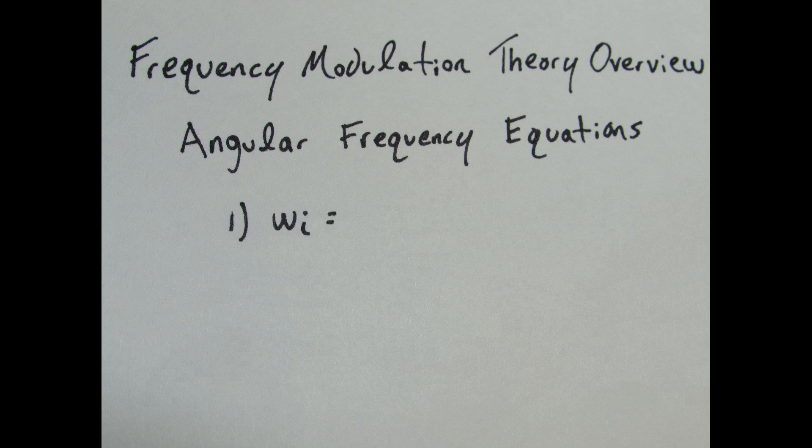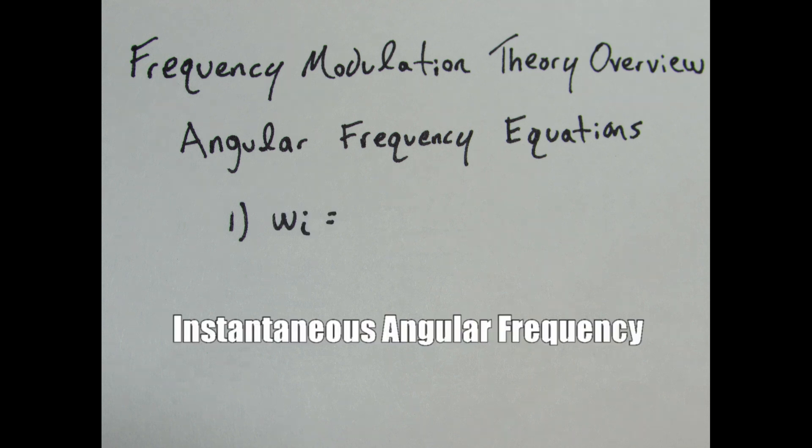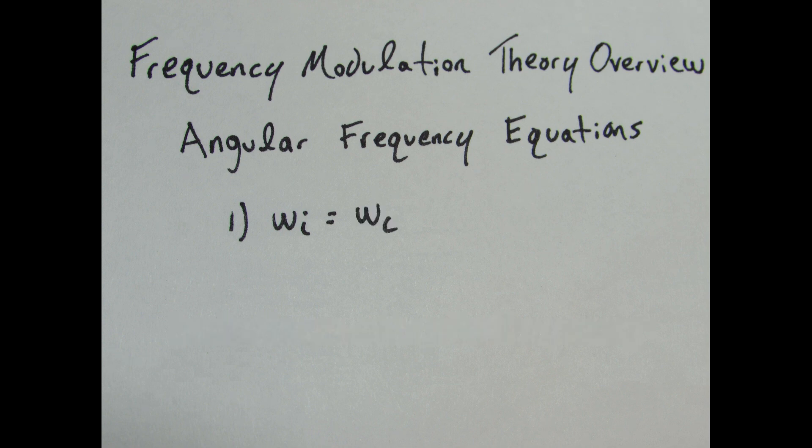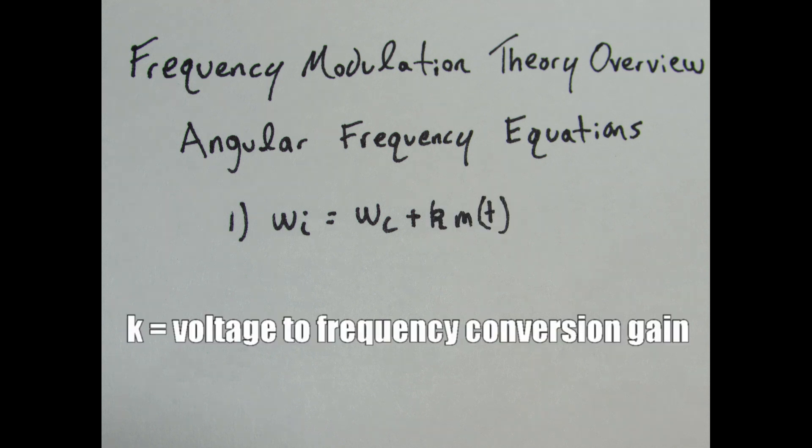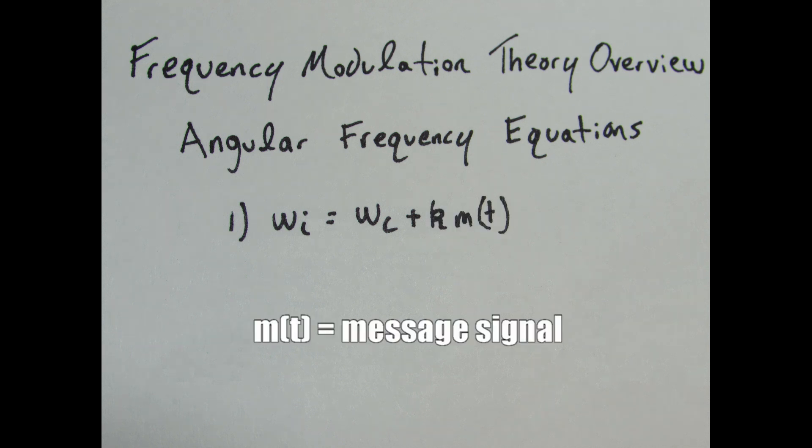It states that omega i, or the instantaneous angular frequency, equals omega c, which is the angular frequency carry, plus the voltage to frequency conversion gain of the VCO times MT, the message signal.